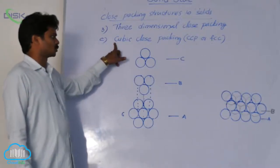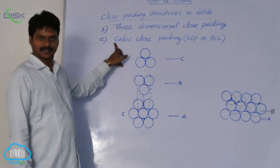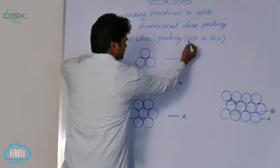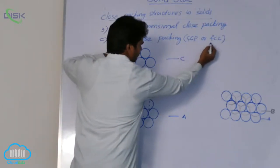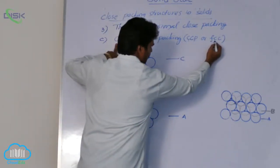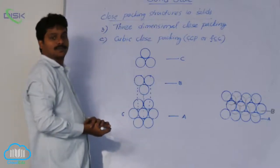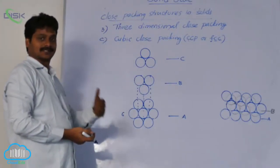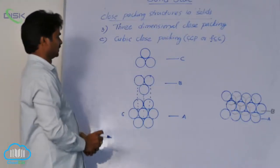The third type is Cubic Closed Packing, also abbreviated as CCP. Cubic Closed Packing is also called FCC, or Face Centered Cubic Closed Packing.